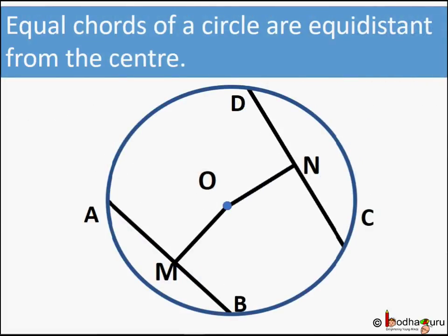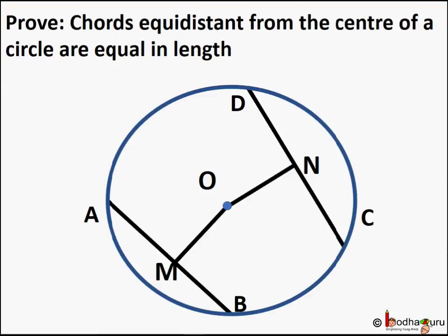Hence OM is equal to ON as they are corresponding sides of the congruent triangles. So we can say equal chords of a circle are equidistant from the center. We can also prove the converse theorem — that chords equidistant from the center of a circle are equal in length. So we are given OM equal to ON and we need to prove that AB is equal to CD.